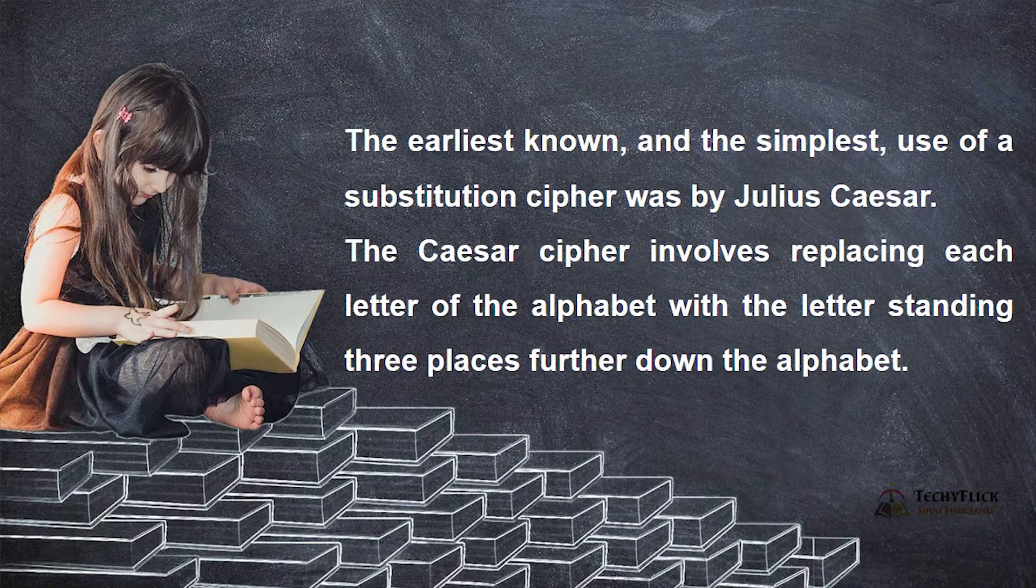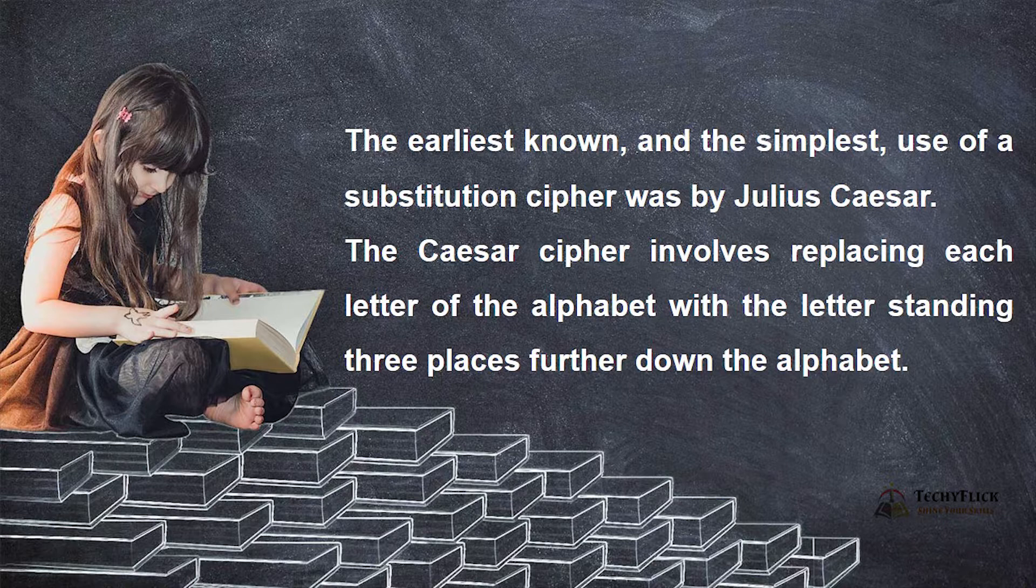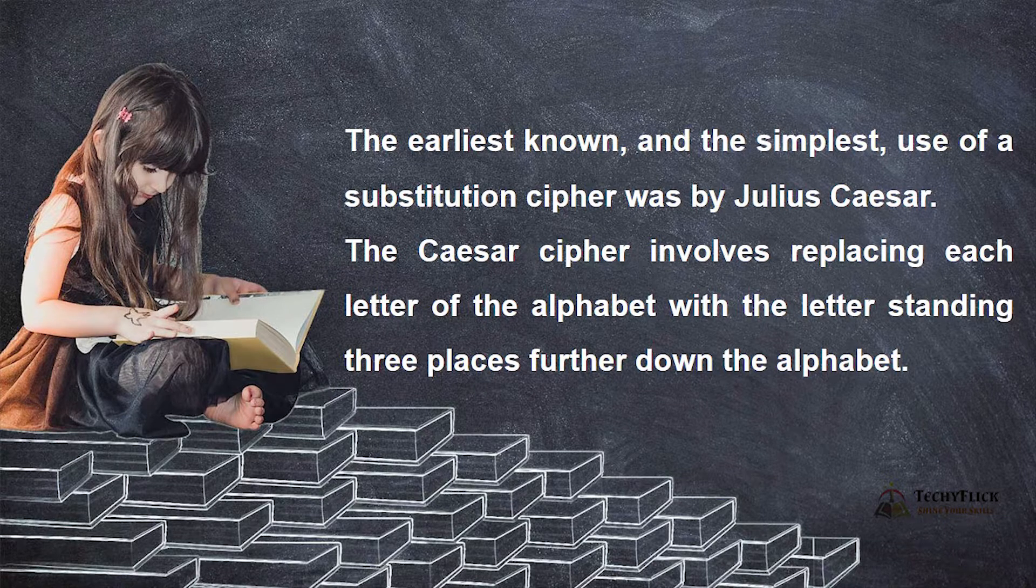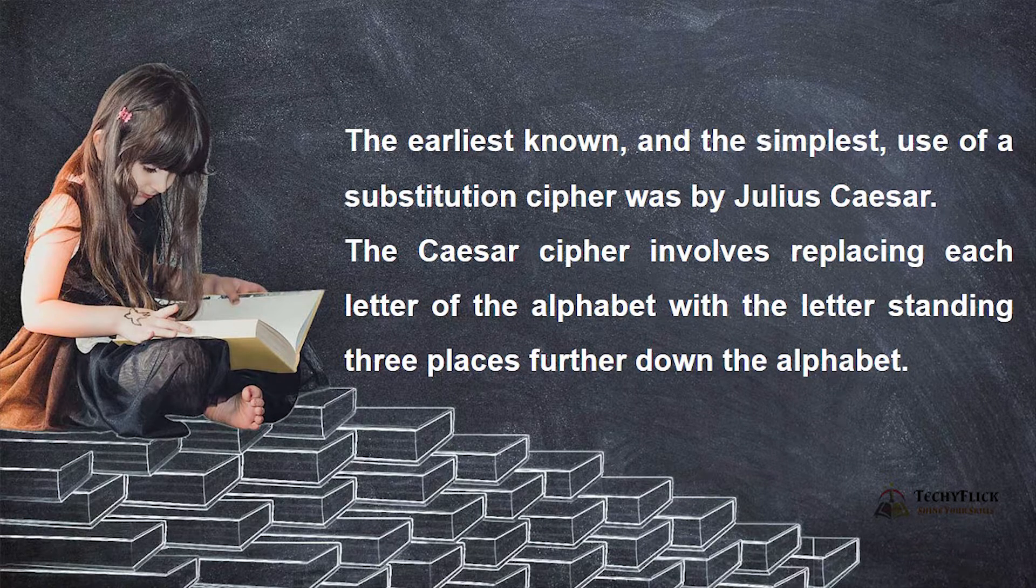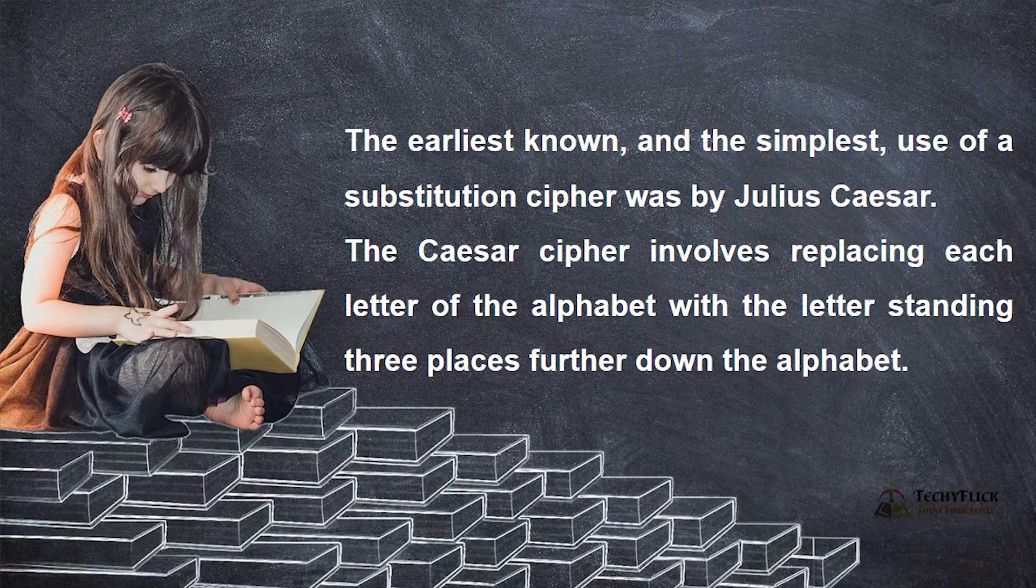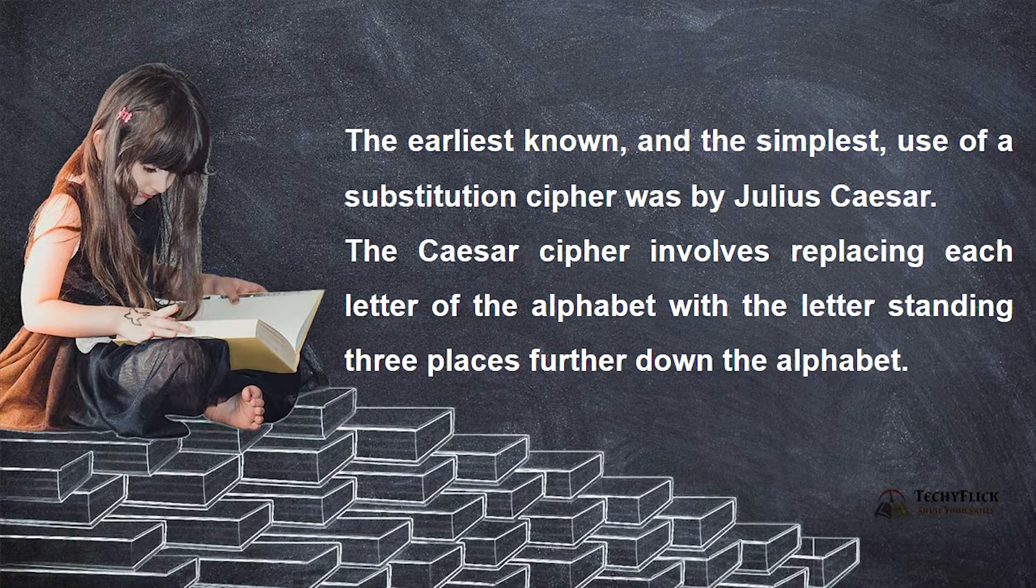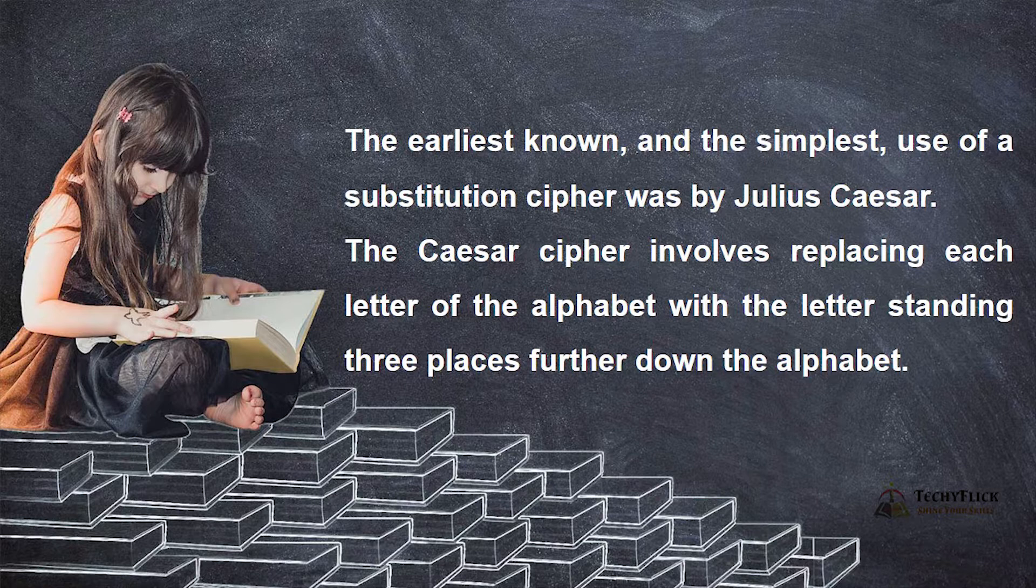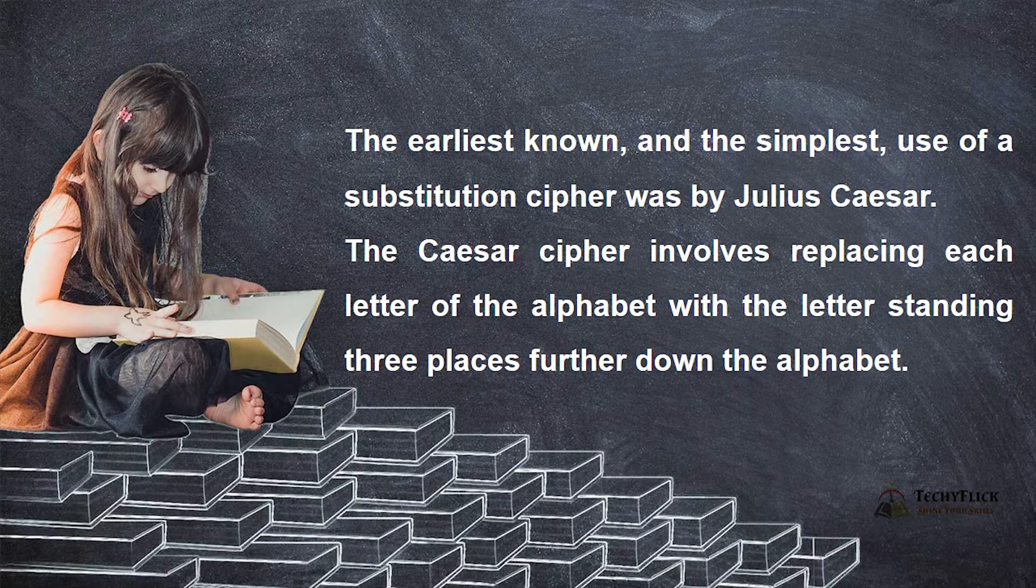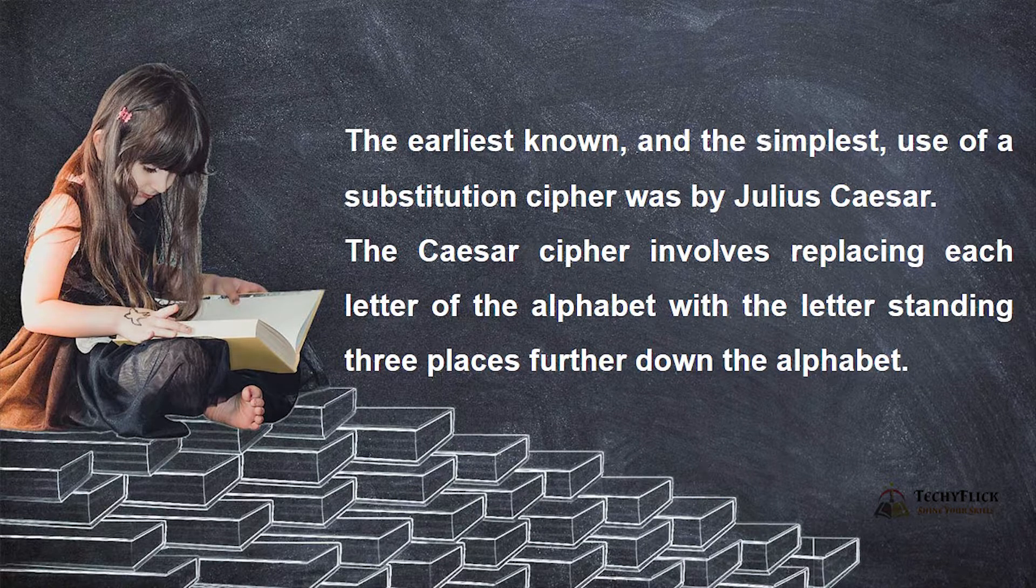So Caesar cipher - Julius Caesar invented this technique, that's why we call it Caesar cipher. In this, we take each letter in the alphabet and calculate 3 places down the alphabet. So the key value is always 3. For example, the letter A - A, B, C - so 3 letters down, A becomes C. That value will replace it, that is Caesar cipher.